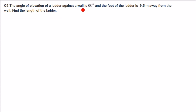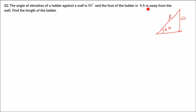The angle of elevation of a ladder against a wall is 60 degrees. Let us make a wall and a ladder — this is a wall, this is a ladder, and the angle of elevation is 60 degrees. The foot of the ladder is 9.5 meters away from the wall. Find the length of the ladder. Again, we are going to use tan 60 — this is going to be this height.